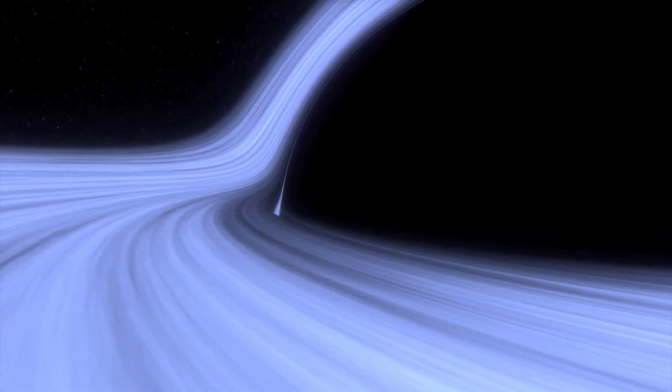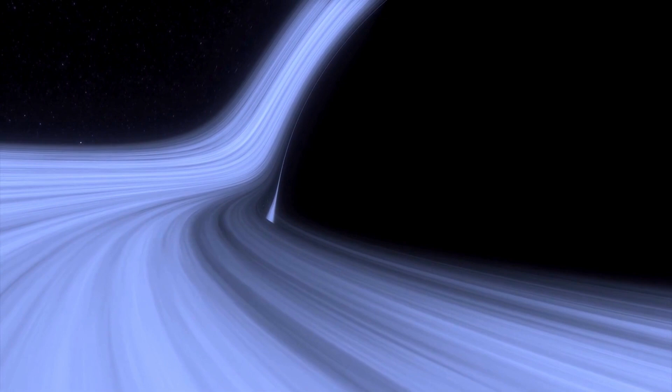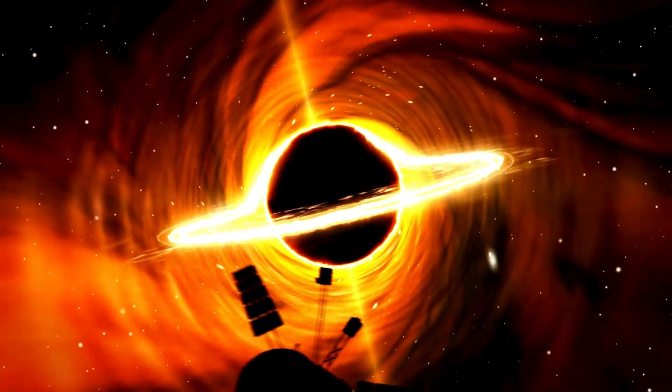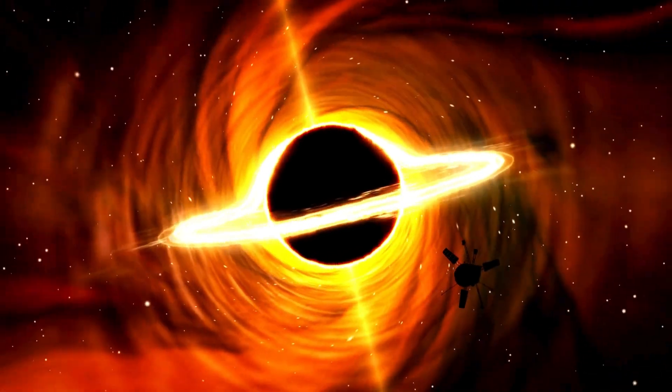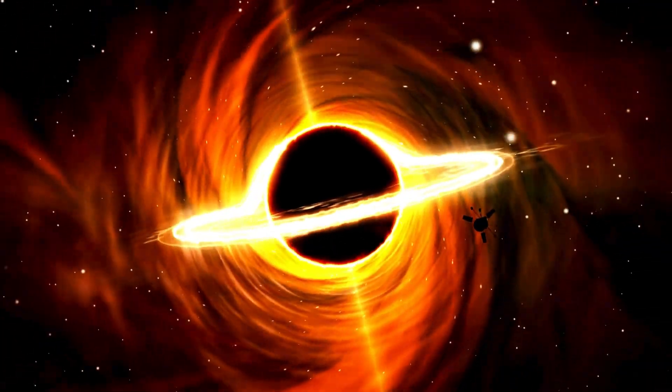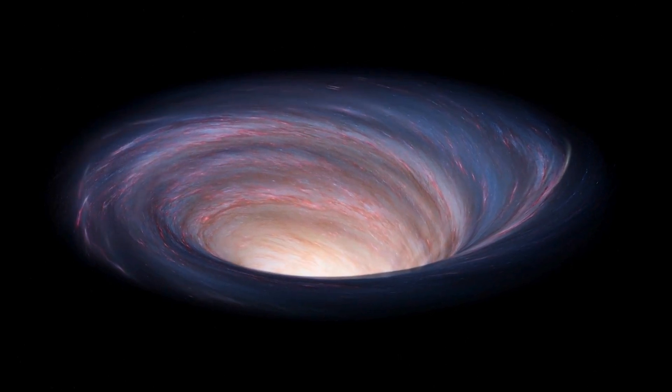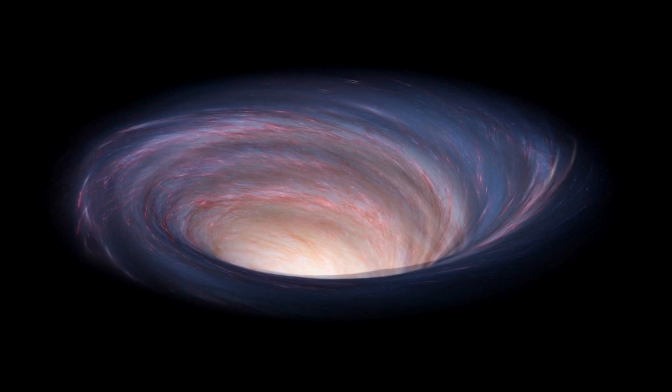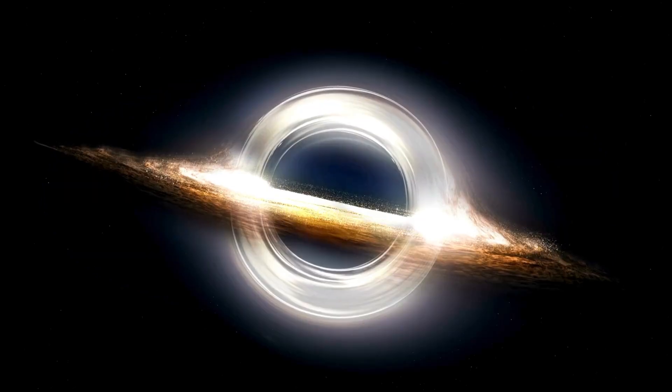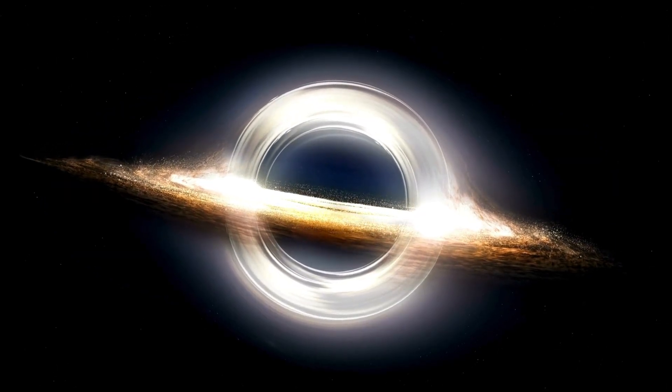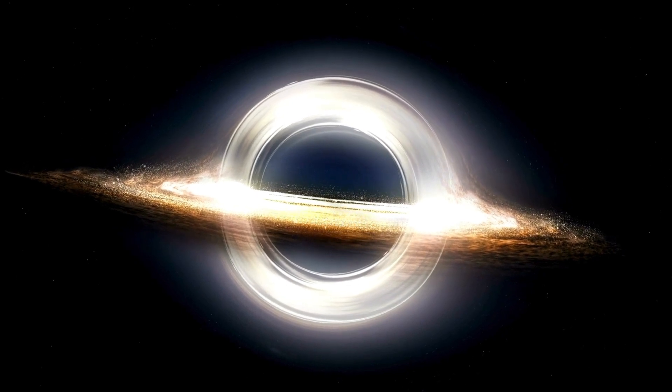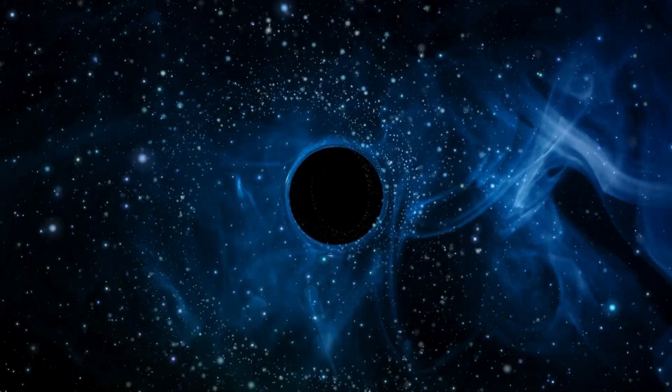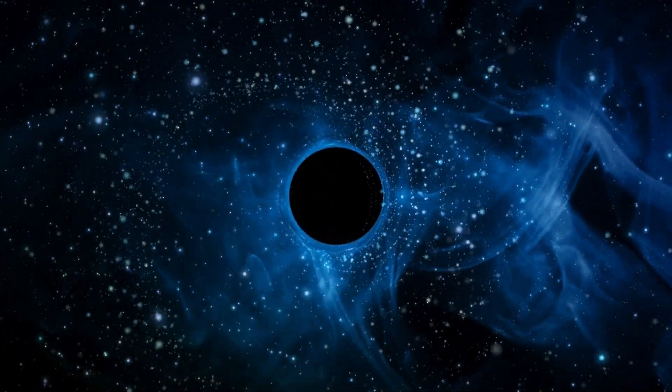But where do black holes come from? Picture this: stars, once radiant and blazing, meet their ultimate end in a spectacular explosion called a supernova. From the remnants of these fallen giants, black holes emerge. Most black holes are born from massive stars that have reached their cosmic retirement party in a supernova explosion. Smaller stars, when they die, become something called neutron stars, which are incredibly dense but not dense enough to trap light. However, if a star is more than three times the mass of our sun, it collapses under its own gravitational force, forming a black hole.